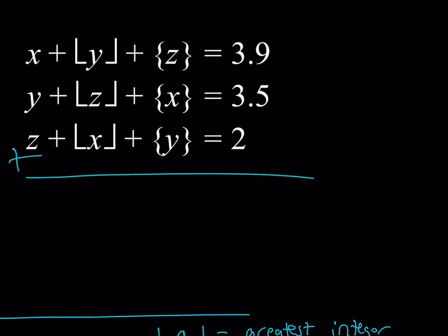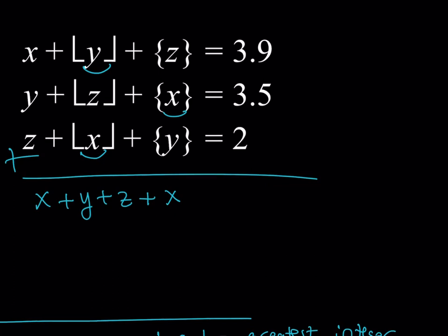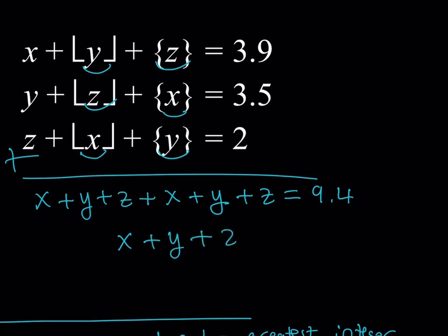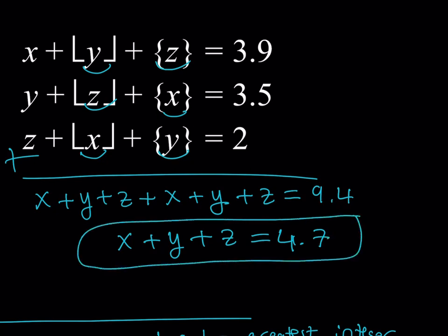When we add these up, we're going to get x plus y plus z for sure. We have the floor value of x added to the fractional part of x, and those two quantities make x. Similarly, the floor value of y and fractional part of y give another y, and same for z. So this sum gives us x plus y plus z twice, equal to 9.4. Dividing both sides by 2, x plus y plus z equals 4.7.